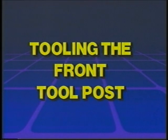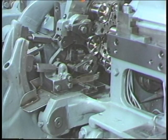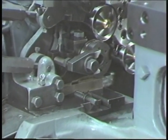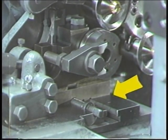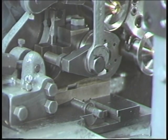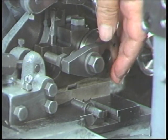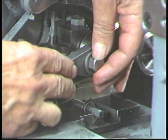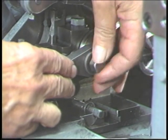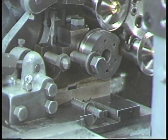Tooling the front tool post. Tool removal. The front tool post is mounted on the first position cross slide. To remove the circular tool or any other tool from the front tool post, first loosen the tool clamp bolt. Then remove the tool clamp and take out the tool.